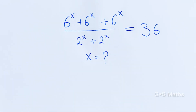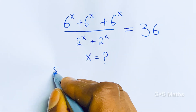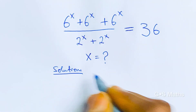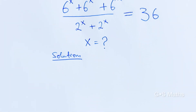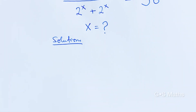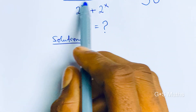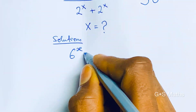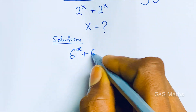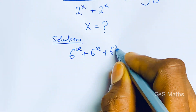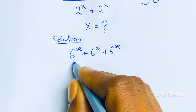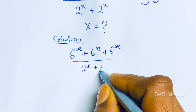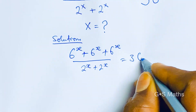To find the value of x in this, all we have to do is get our solution in this equation. I'm going to take it in just a few simple steps. So step 1, what we are going to do is write out our equation: 6x plus 6 to the power of x plus 6 to the power of x, divided by 2 to the power of x plus 2 to the power of x, is equal to 36.